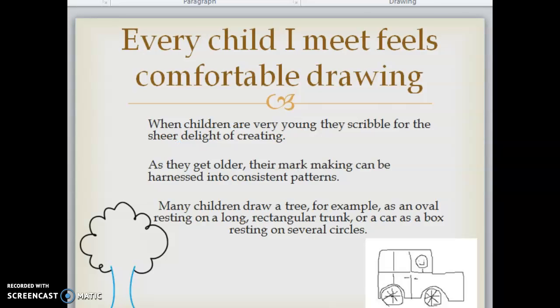Every child I meet feels comfortable drawing. When children are very young, they scribble for the sheer delight of creating. As they get older, their mark making can be harnessed into consistent patterns. Many children draw a tree, for example, as an oval resting on a long rectangular trunk, or a car as a box resting on several circles, much like what you see here. It's like we have a universal language automatically in drawing.